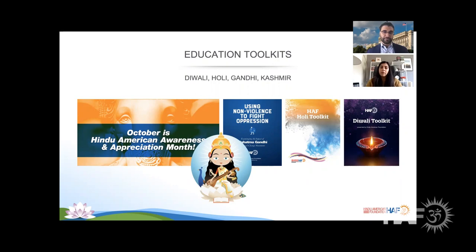We have many different toolkits and educational resources on our website. October is Hindu American Awareness and Appreciation Month — an initiative we've been working on since 2013, getting it passed in states such as California and Michigan, and expanding to other states this year. We have a Gandhi toolkit, since Gandhi's birthday is in October, which explains his life lessons as well as lessons from Martin Luther King Jr. and Cesar Chavez, encouraging students to use non-violence for social change. We also have our Holi toolkit, which explains the festival of colors with activities for classroom and home use.